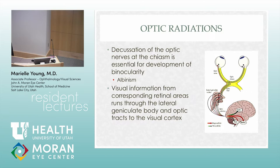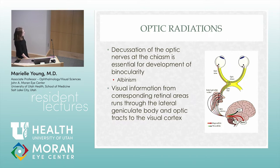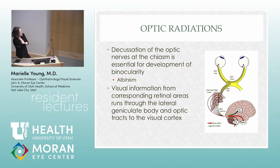The optic radiations decussate at the chiasm, and that's really essential for binocularity. People with albinism have all their fibers cross, whereas in normal people only the nasal fibers cross — so people with albinism don't have normal binocularity. Creel demonstrated this using a VEP, which records electrical activity at the back of the brain in response to light. In kids with suspected albinism who have nystagmus and can't do OCT well, a VEP shows a different response than normal.